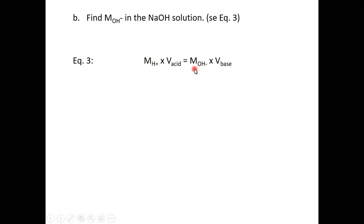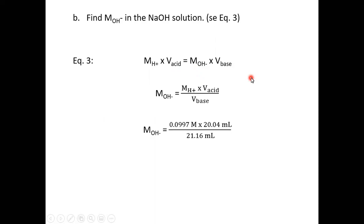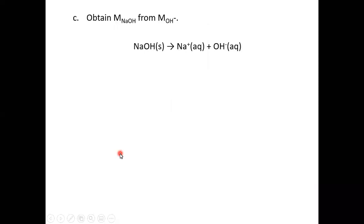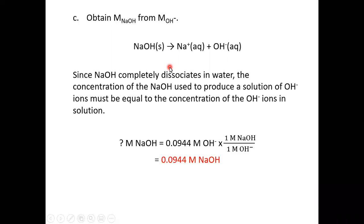We can use equation three to figure out the molarity of our hydroxide ion because we know all the other values from the experiment — we just rearrange and solve for OH⁻. The molarity of the hydroxide ion is limited to three significant figures because our hydrogen ion molarity was also three significant figures. Then, since NaOH breaks up into Na⁺ and OH⁻ in a one-to-one ratio, if we have 0.0944 M OH⁻, we also have 0.0944 M NaOH.